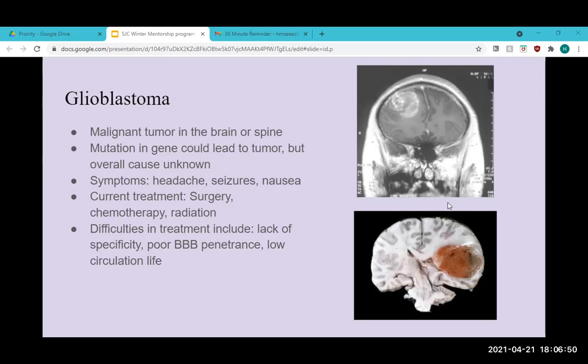Like most other cancers and tumors, the current treatment includes surgery. If the tumor hasn't spread too far throughout the body, they can simply remove it through surgery. There's also chemotherapy and radiation therapy. But these treatments come with difficulties, including lack of specificity. I'll go deeper into that when I actually talk about the treatments they used. That's the main problem that nanomedicine is trying to solve in this paper.